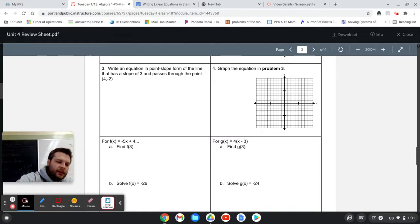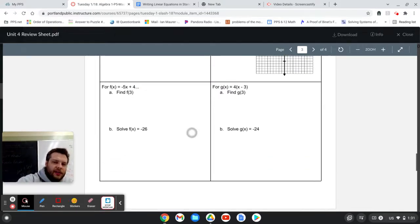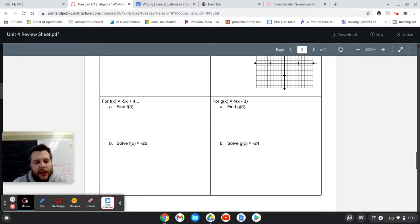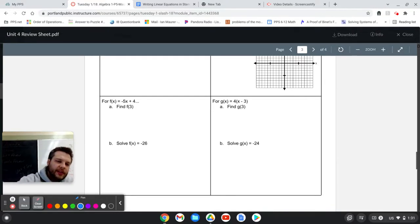And the last thing I'll say about this review packet is that these sorts of problems here, down below with the f of x and the g of x, they're optional. They're from when we taught this a couple years ago, before COVID, we were able to get through function notation. I didn't quite get through it this year. If you want to try them out on the test and on the review, you can. But if you don't try them out, it won't hurt you. The basic idea is that this means plug in x equals 3. This means set the equation equal to negative 26 and solve for x.